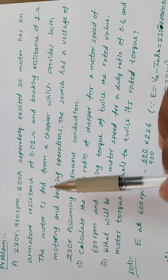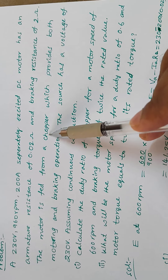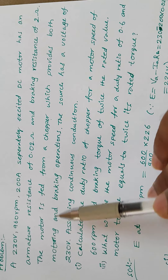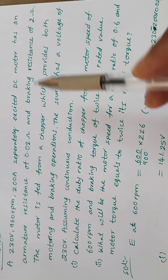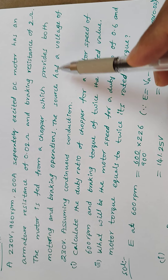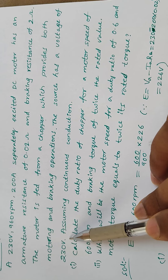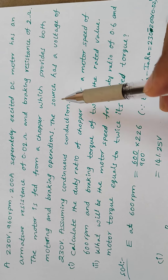So this is dynamic braking. The motor is fed from a chopper, which provides both motoring and braking operations. The source has a voltage of 230 volts, assuming continuous conduction.